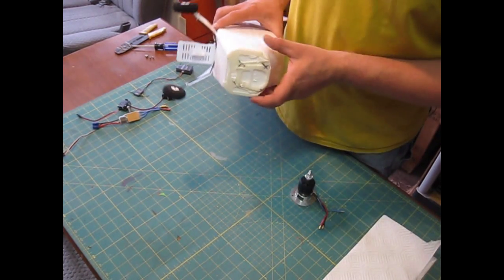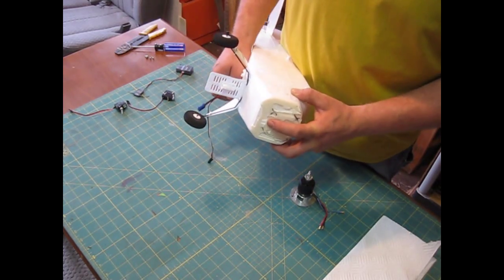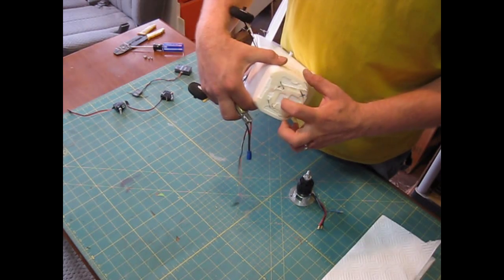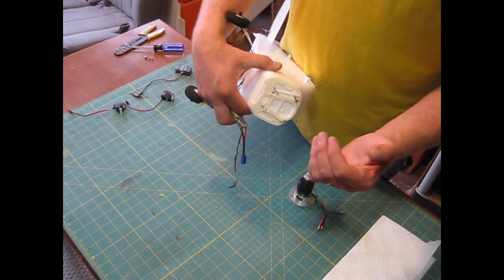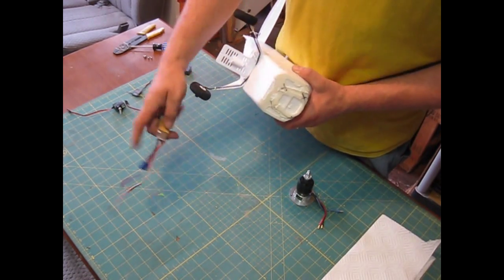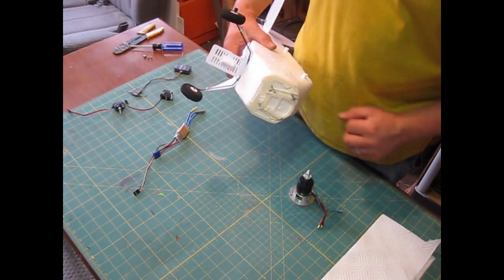And before I do any of that, my ESC is going to need a lot more room than the original two wires. So, I'm going to take and hog out a hole here so that one, I can mount it inside and two, plenty of air is going to blow past it. So, I'll get to that and we'll come back when it's done.